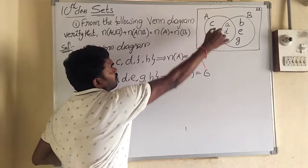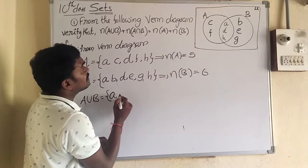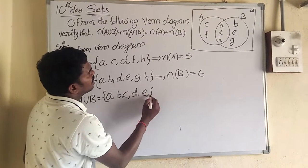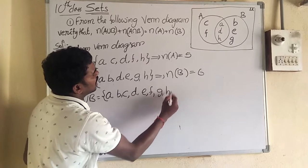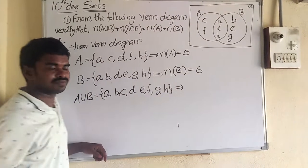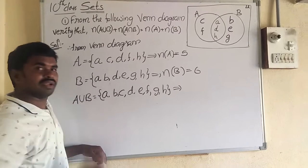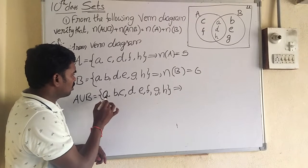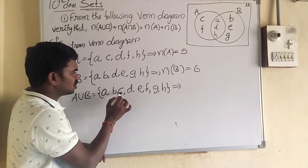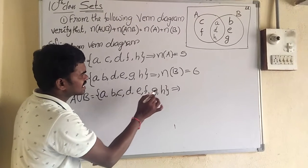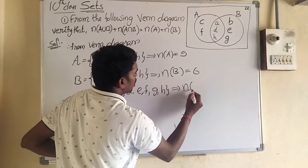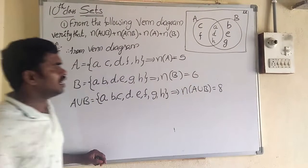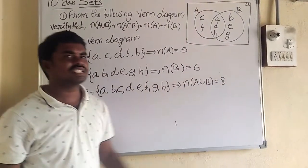From the Venn diagram, A union B equals {A, B, C, D, E, F, G, H}. In A union B, how many elements are there? Count: 1, 2, 3, 4, 5, 6, 7, 8. So the number of elements in A union B is equal to 8.